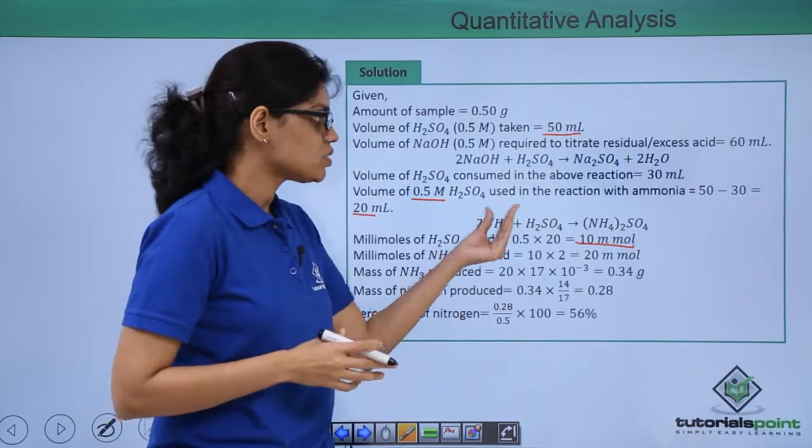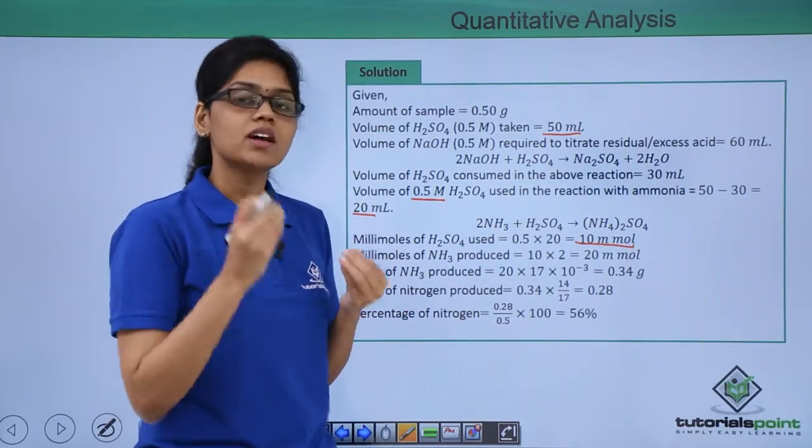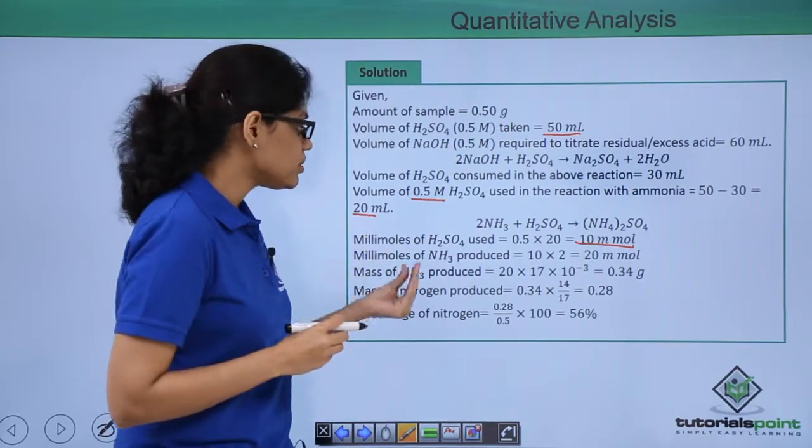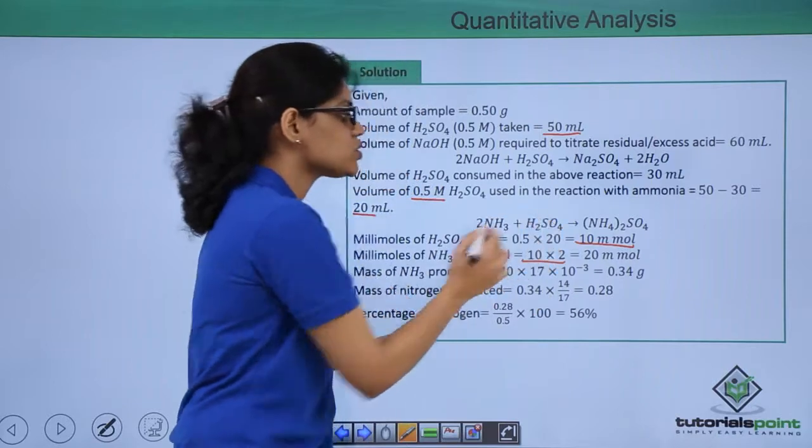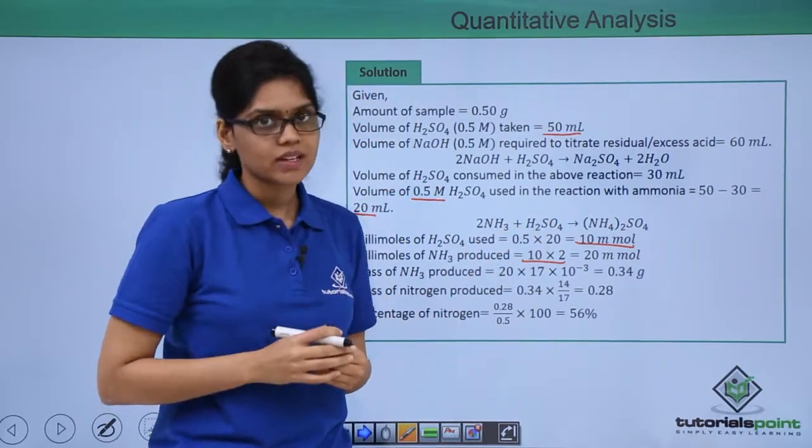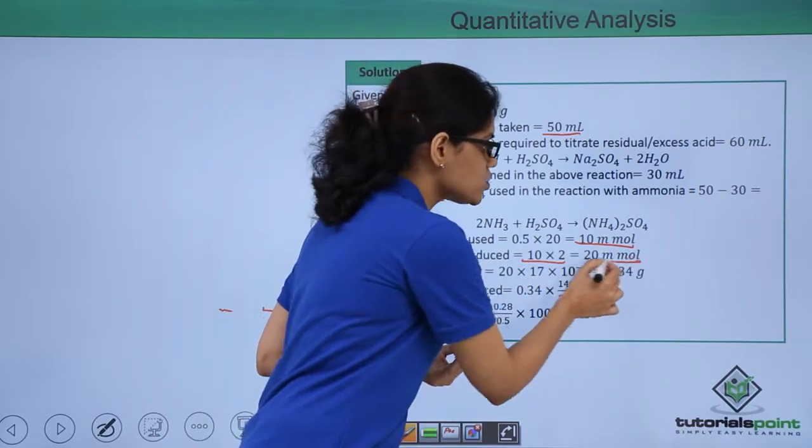Based on this reaction you can easily understand how much will be the ammonia produced. That would be millimoles of ammonia produced would be simply 10 into 2 as the mole ratio of ammonia to sulfuric acid is 2 is to 1. So the millimoles of ammonia produced is 20 millimole.